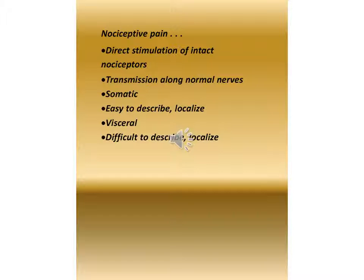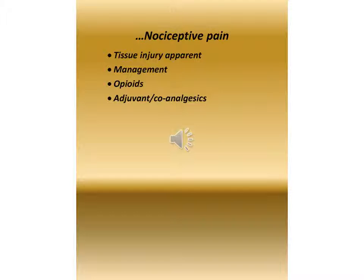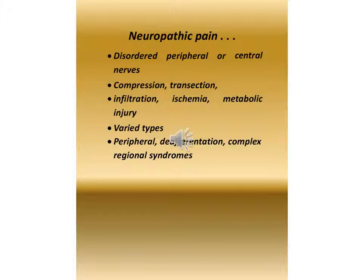Nociceptive pain involves direct stimulation of intact nociceptors and transmission along normal nerves. Somatic pain is easy to describe and localize, while visceral pain is difficult to describe and localize. Tissue injury is apparent. Management includes opioids and adjuvant or co-analgesics.